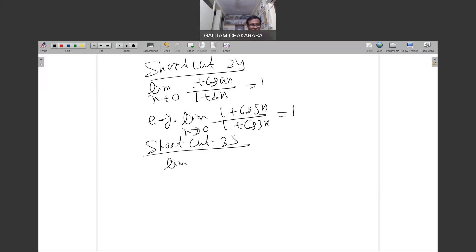Limit x tends to infinity, ax plus b sine cx by dx plus b sine px is equal to a by d. Example: x tends to infinity, 2x plus b sine 3x over 5x plus b sine 7x is equal to 2 by 5, okay.